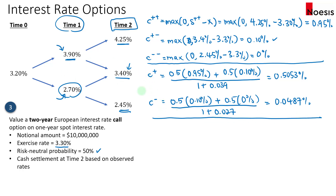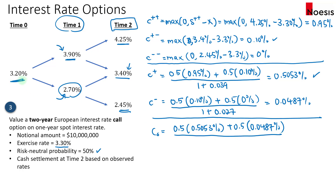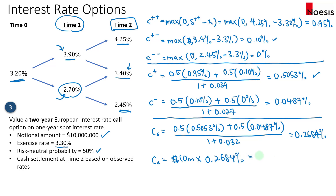Finally, we discount back to time zero. The call option price at time zero is 0.5 times 0.5053% plus 0.5 times 0.0487%, divided by 1 plus 3.2%. That gives us approximately 0.2684%. Scaling to $10 million, the call option value is $26,840.